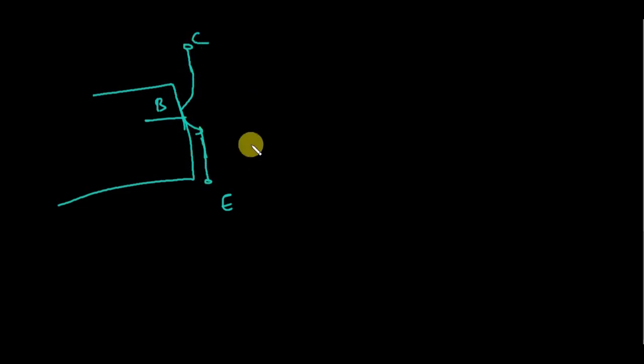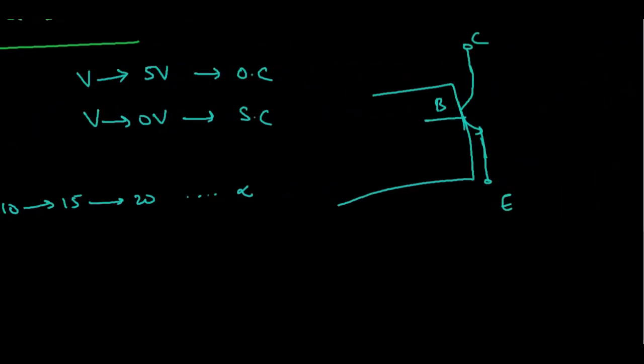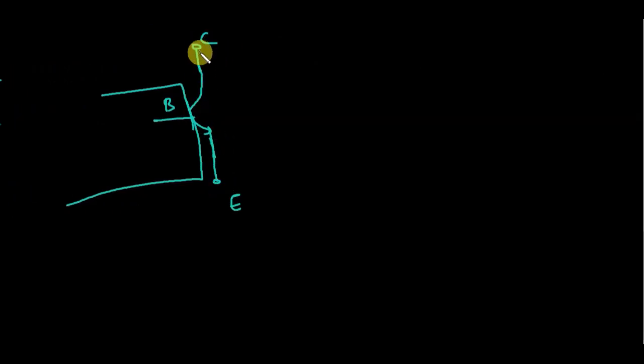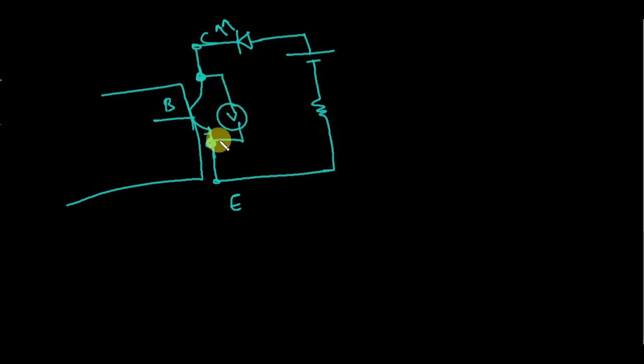In a regular switch we use our hand to turn it on or off. Now consider a transistor — it has three terminals: collector, emitter, and base. For now, just neglect the base; we're interested in the collector and emitter. These two terminals can be interpreted like the two terminals of a switch. I'll connect the same circuit here: a battery, a resistor to limit current, and these two terminals acting like a switch.